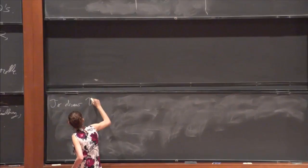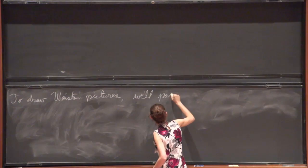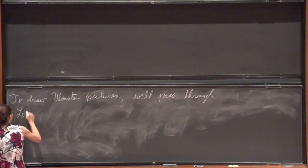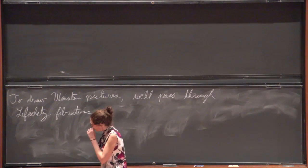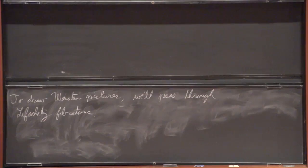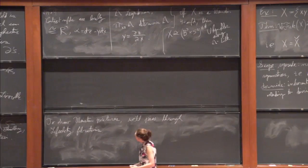So to draw these Weinstein pictures, we'll pass through Lefschetz fibrations. So Lefschetz fibrations, you know, I think most people know what this is. This is kind of a real Morse theory here, whereas this is kind of a complexified Morse theory. So this is easier to get from polynomials because we're always just working with complex functions. But being a Morse theory, it's kind of a natural step along the way to this more real Morse theory.